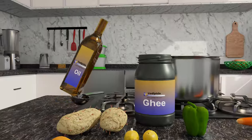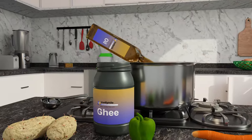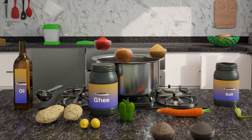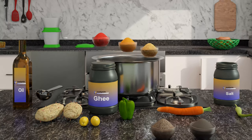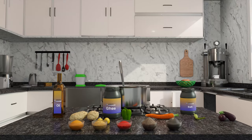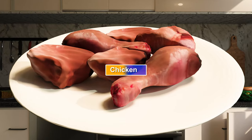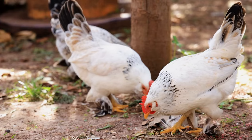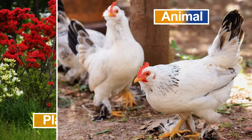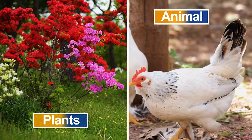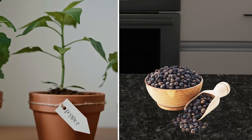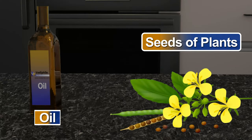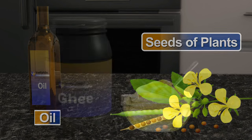First of all, obviously oil, chicken, and then we will add spices and other things. So we find chicken from animal or plant? Obviously from animals. We get spices from plants, and oil from some seeds of the plants.